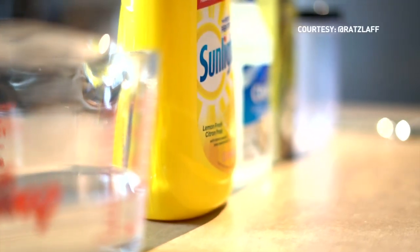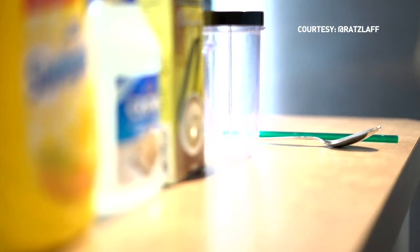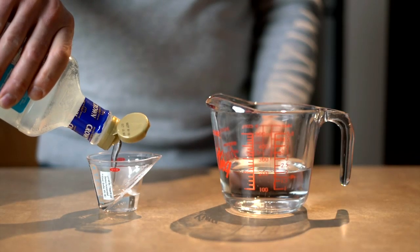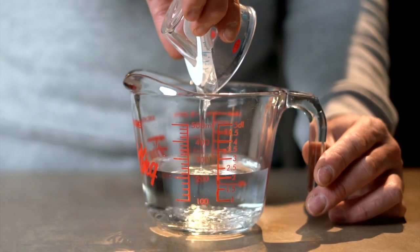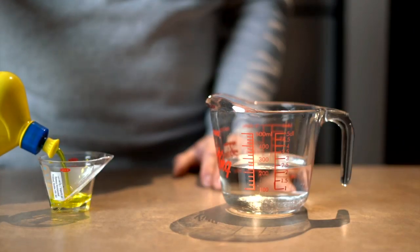I have to credit Chris Ratzlaff, frozen bubble extraordinaire, for the specific recipe and preparation instructions. First, we add 35 milliliters of corn syrup to 200 milliliters of warm water. This is for thickness.